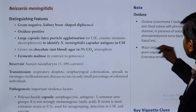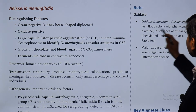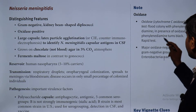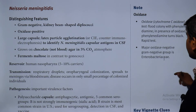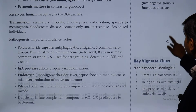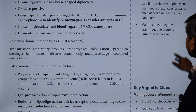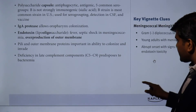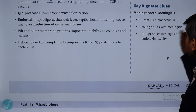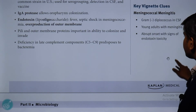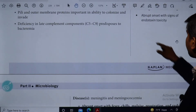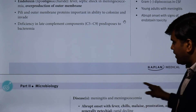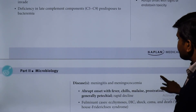If a person has deficiency of complement components C5–C9, these bacteria will not be easily killed and will spread throughout the blood. Regarding the oxidase test: it is the cytochrome oxidase test — flooding a colony with phenylenediamine; in the presence of oxidase, phenylenediamine turns black rapidly. Major oxidase-negative gram-negative groups include the Enterobacteriaceae. N. meningitidis is a gram-negative diplococci found in CSF in young adults with meningitis presenting with abrupt onset of endotoxin toxicity signs.